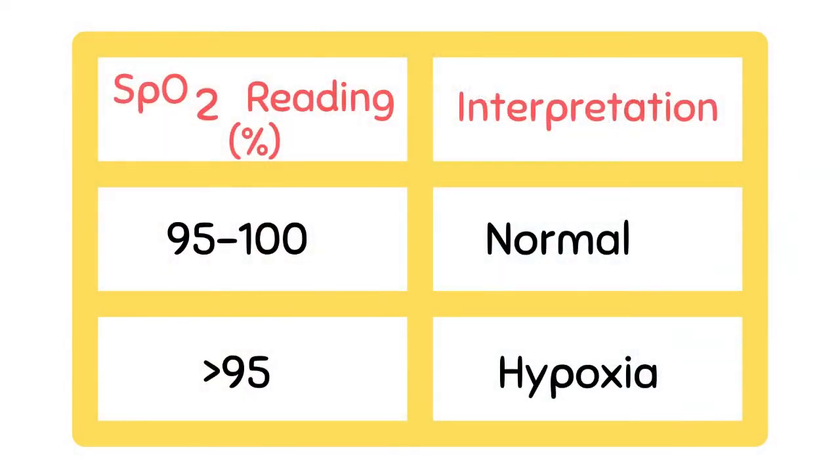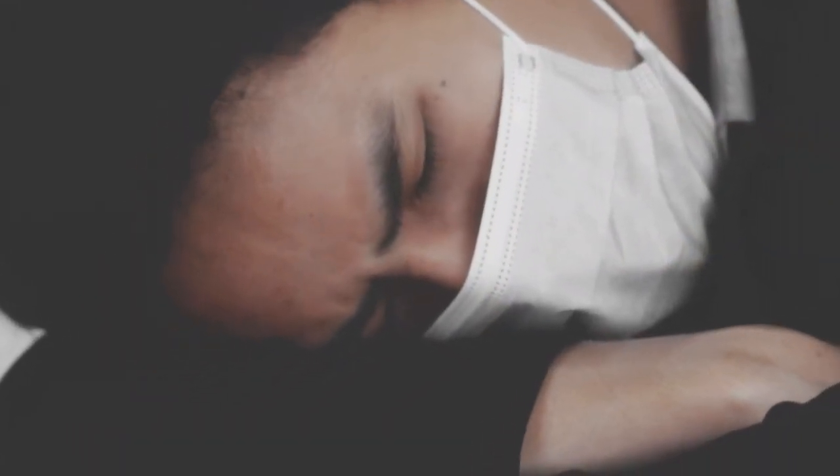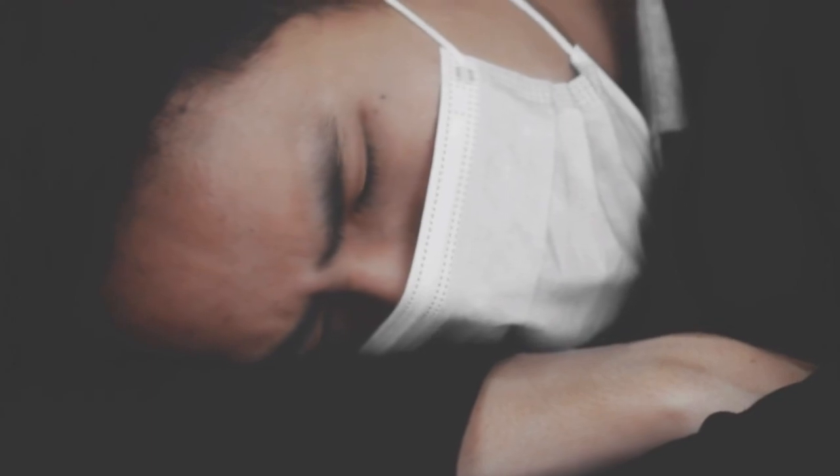For a healthy individual, the normal SpO2 should be between 95% to 100%. Anything below 95% is an indicator of hypoxia, a condition indicating low oxygen in your tissues or organs. When your blood oxygen level goes outside the typical range, you may begin experiencing symptoms.